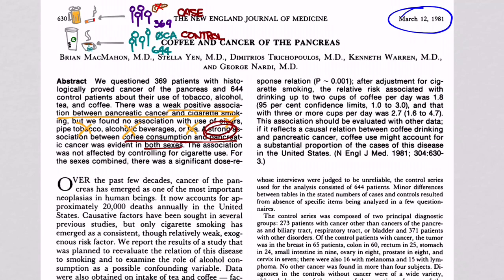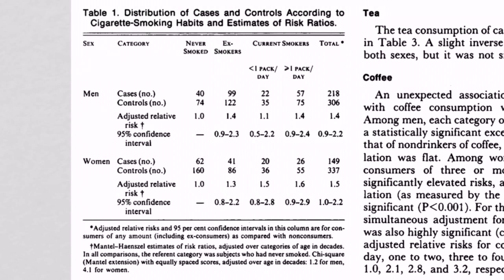We've read the abstract. Step two: let's look at the tables. Table one in most papers gives you the demographics of each group — cases and controls — how many men there were, comorbidities, whatever is relevant. In this case it's a bit different: we're looking at the distribution of cases and controls according to cigarette smoking habits and estimates of risk ratios. They split the data by men and women, cases versus controls, and across the top we have never smoked, ex-smokers, less than a pack a day, and more than a pack a day.